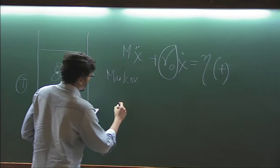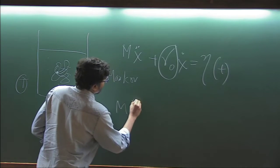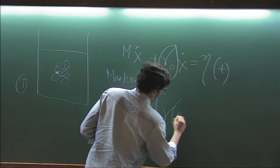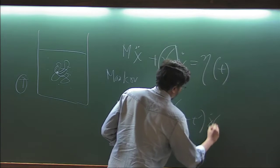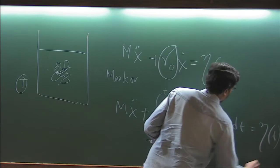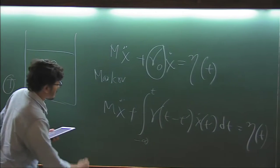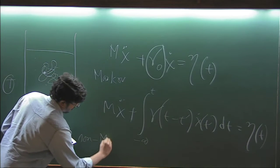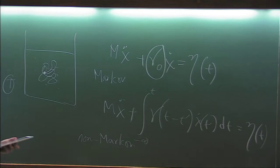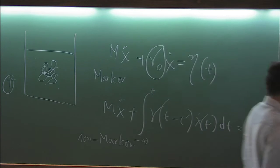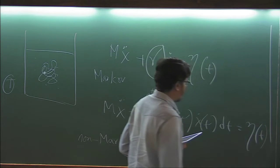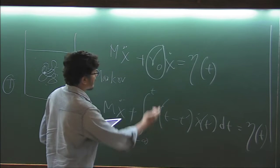So we can generalize it by introducing this noise. So this is some memory, this is the memory kernel. So this is not Markov. Alright. So now there are a few models. So let me just explain these words. What is Ohmic, what is Drude? The models are named by choosing this memory kernel.